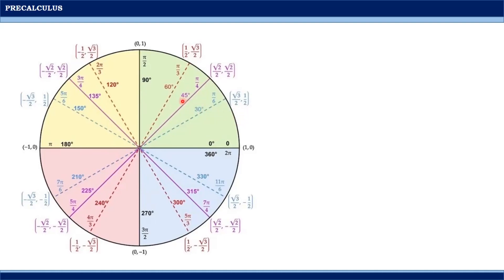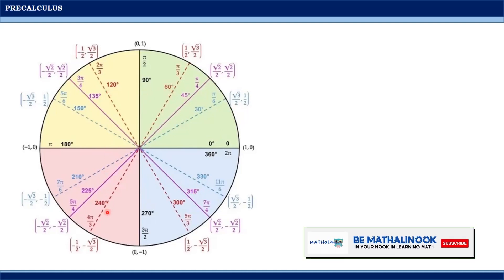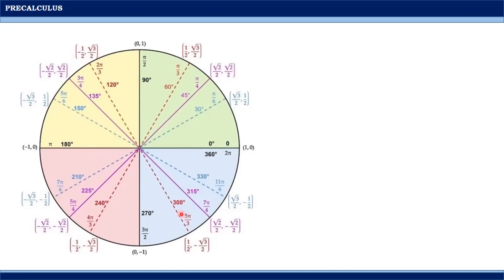Similarly, 45 degrees, 135 degrees, 225 degrees, and 315 degrees have the same numerical coordinates. The same applies to 60 degrees, 120 degrees, 240 degrees, and 300 degrees. This is because of the concept of the reference angle.